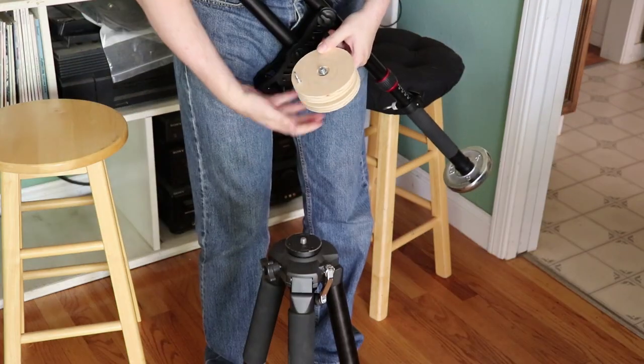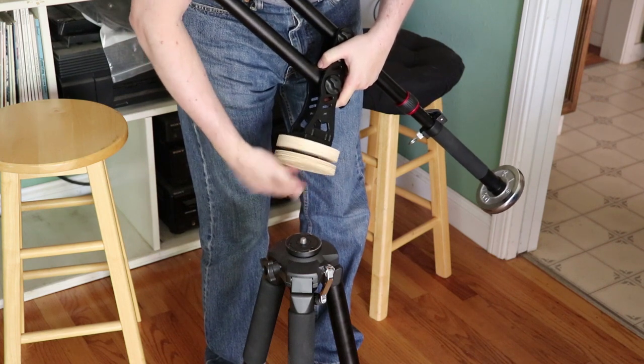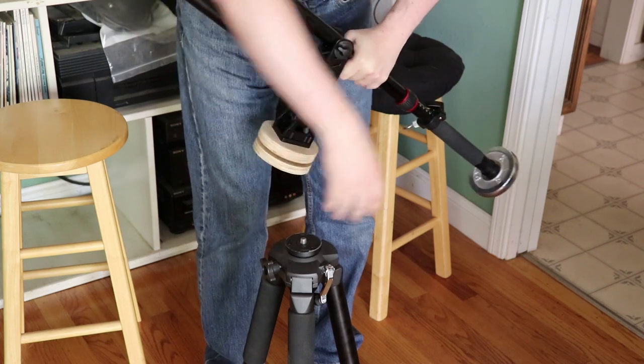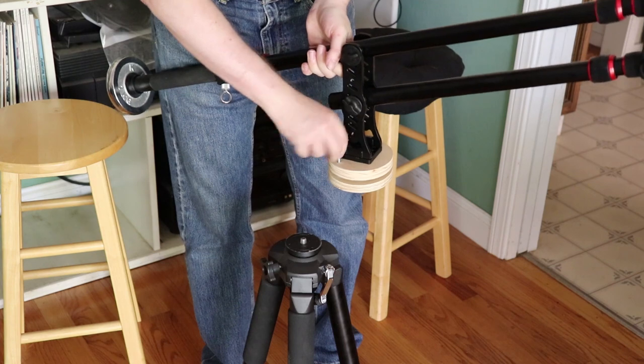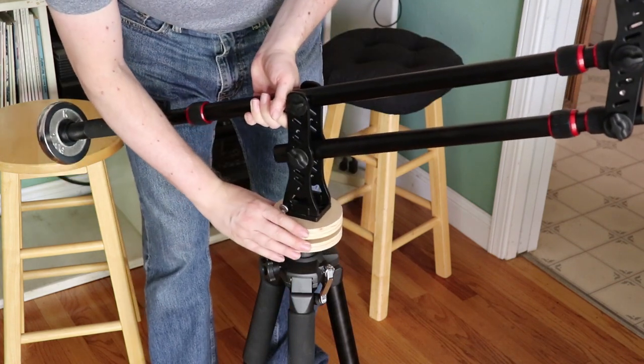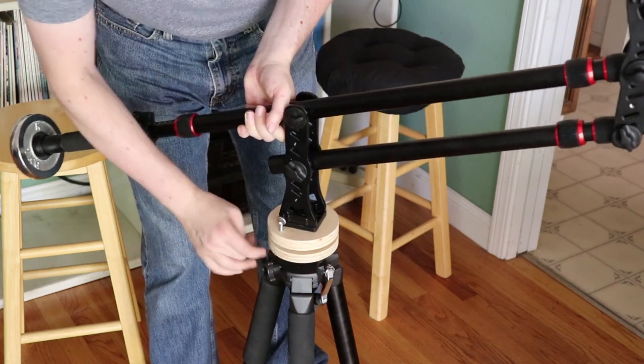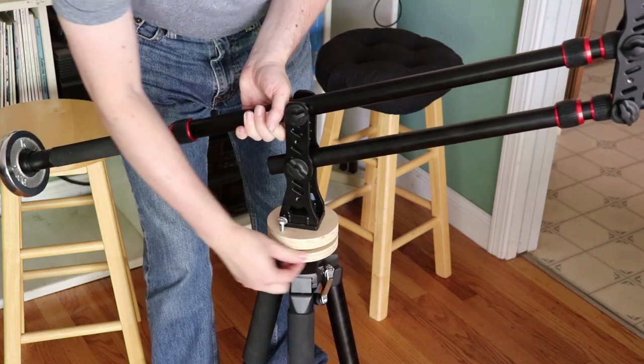So here's how the turntable goes on. All I have to do is screw it onto the camera boom. Then screw the turntable down onto the tripod legs. I don't have to spin the whole thing around and around and around, and this is a lot easier.